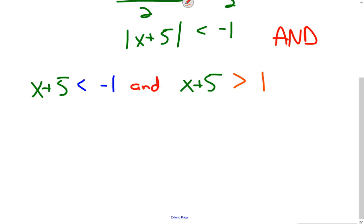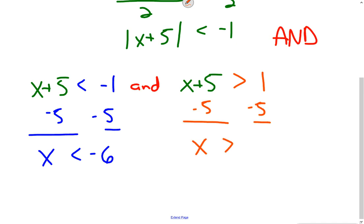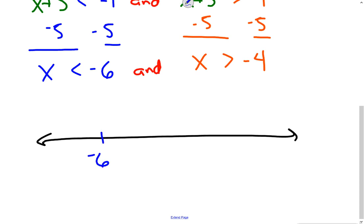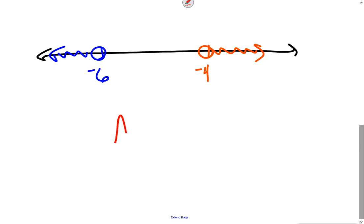Remember, in the end this is still an AND compound inequality. Solving the first: subtract 5 from both sides — x is less than negative 6. Solving the second: subtract 5 from both sides — x is greater than negative 4. Graphically, negative 6 is farther left than negative 4. X less than negative 6 goes left, x greater than negative 4 goes right. Since it's an AND, was it possible to have a number greater than negative 4 and less than negative 6? No — so this one has no solution.